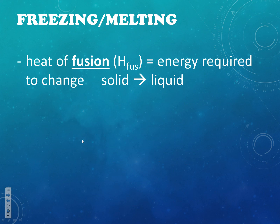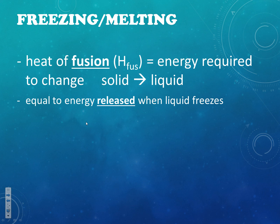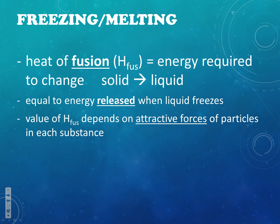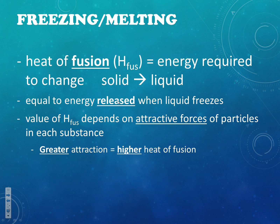Now let's get into specific numbers. The heat of fusion is the energy required to melt something — to change it from a solid to a liquid. It also applies to the opposite process: going from a liquid to a solid (freezing) involves the same amount of energy, just in the other direction — one process has a positive change in energy, one has a negative. Heat of fusion represents both melting and freezing. A stronger attraction between particles means a higher heat of fusion, because it's harder to pull them apart.